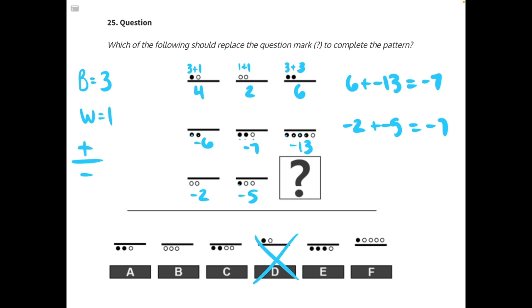You can eliminate answer choice D and answer choice F because the circles are above the line, making them positive when we really want a negative answer. Looking through the rest of our answer choices, B represents negative 3, which is too small.